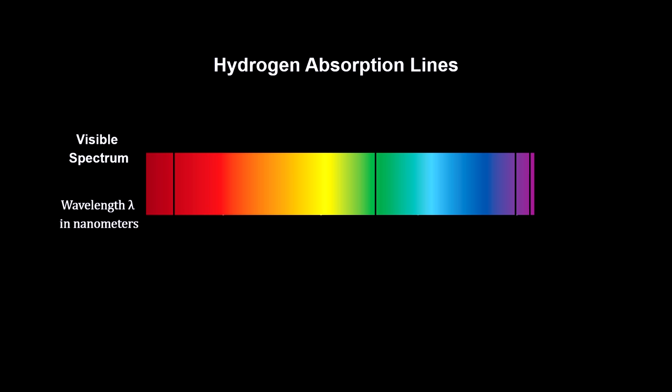Light from an approaching star has its wavelengths shortened. We see that the lines shift to the blue. They are said to be blue-shifted.